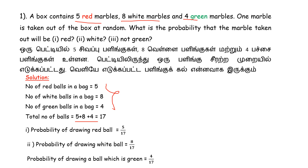Then the probability of drawing a green ball: 4 divided by 17. For not green, we use the formula P(not E) = 1 minus P(E). So 1 minus P(green), where P(green) is 4 divided by 17.